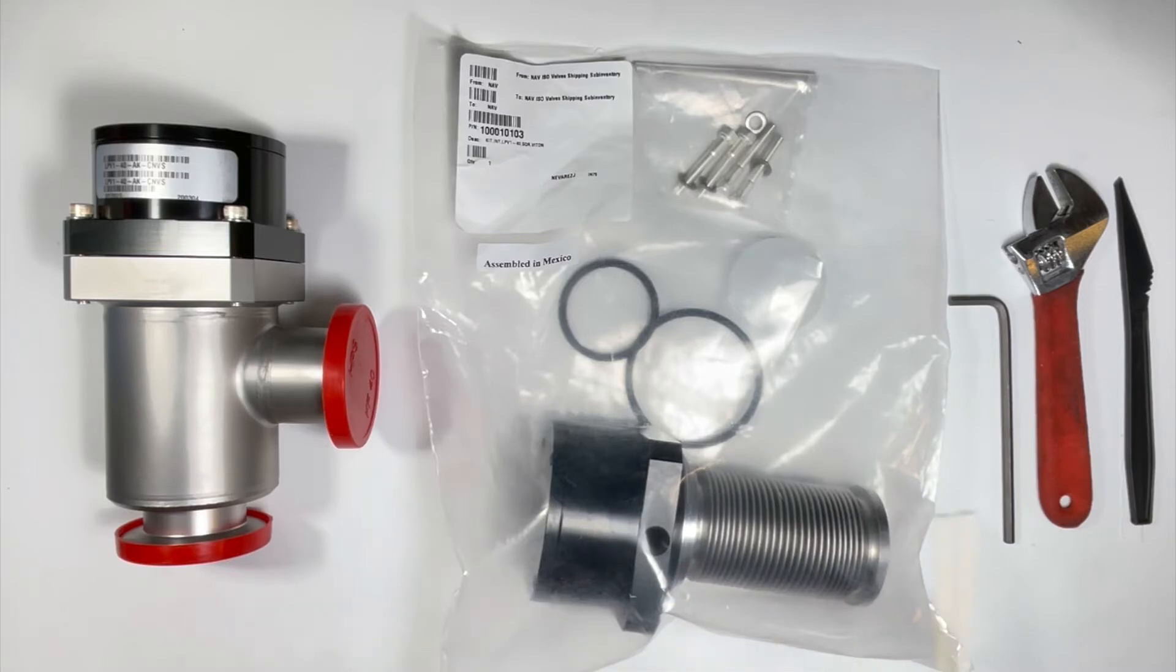You may also require a soft, non-stainless steel tool to assist in removing seal material that could be stuck to the inside of the valve, such as this nylon knife that I have here, cleaning solution such as isopropyl alcohol for cleaning the inside of the valve and sealing surfaces, and a lint-free wipe or cloth.